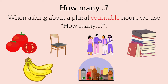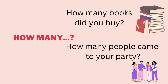When asking about a plural countable noun, we use the question how many. For example: how many tomatoes? How many chairs? How many people? How many books? How many bananas? How many cities? Let's look at some more examples.